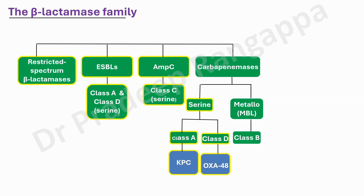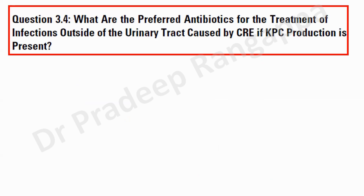This is the classification you need to keep in mind, because today we'll be talking about the IDSA recommendation for KPC, which belongs to class A of the serine group of carbapenemases. The whole carbapenemase group is divided into serine and MBLs, and serine is divided into class A (KPC) and class D (OXA-48). The IDSA question was: what are the preferred antibiotics for treatment of infections outside the UTI caused by carbapenemase-producing, carbapenem-resistant Enterobacteriaceae when KPC production is present?